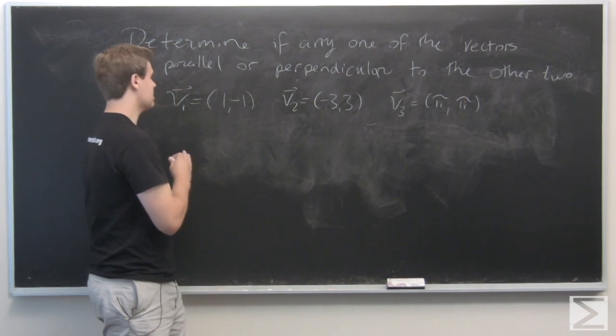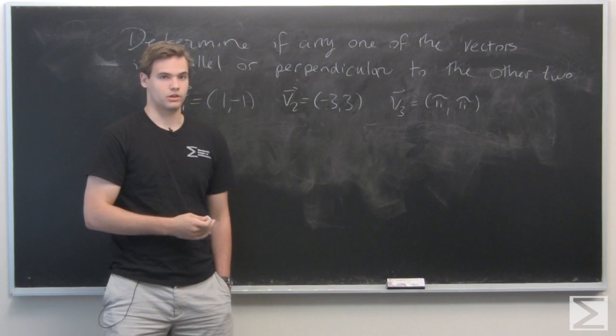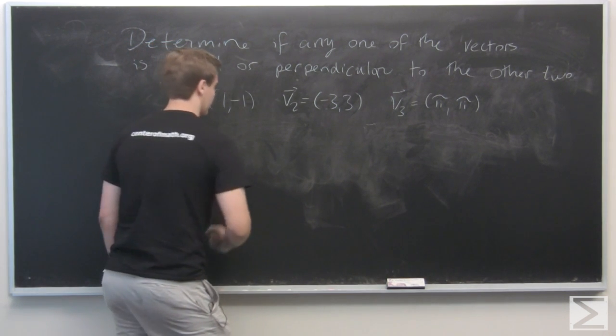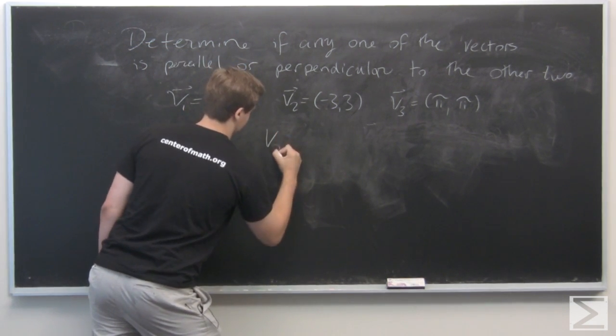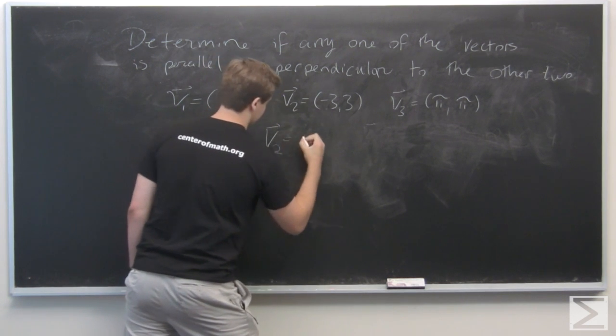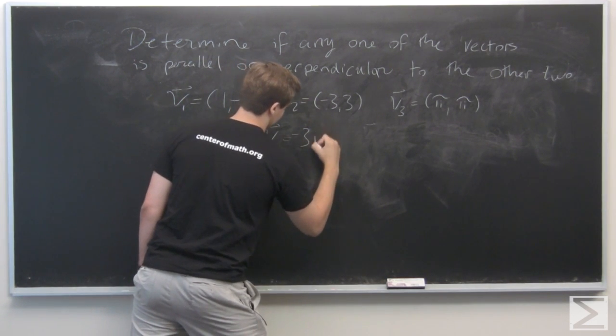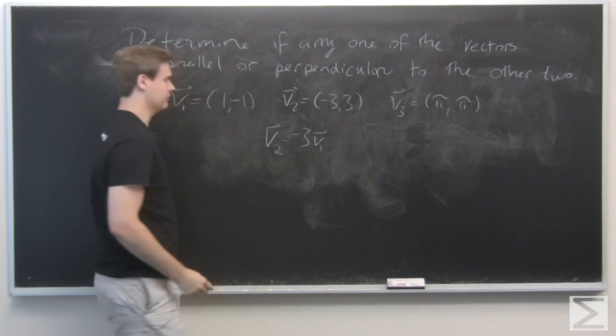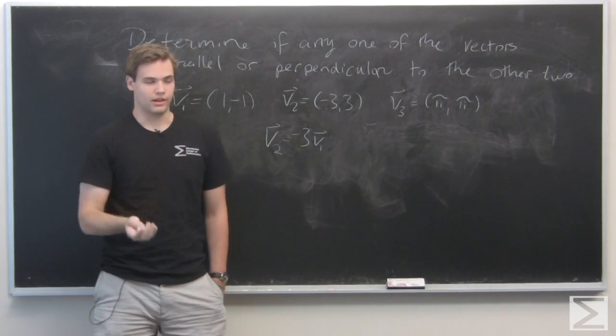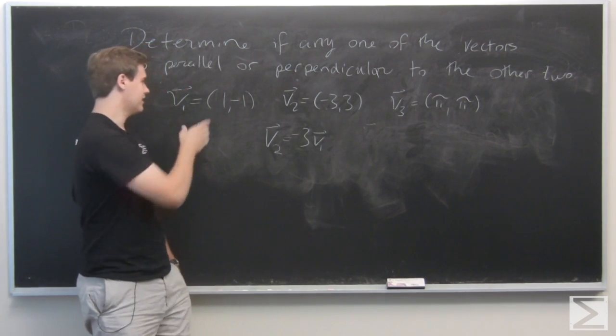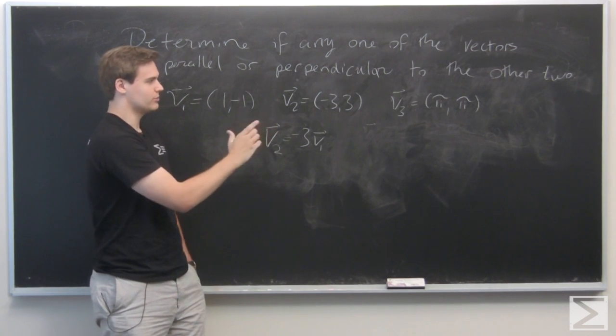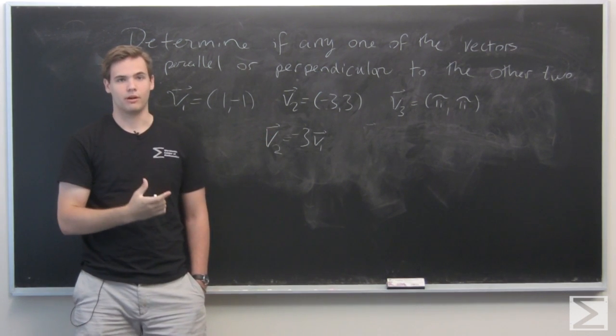Right off the bat, we can see that v1 and v2 are scalar multiples of each other and are, in fact, related by v2 = -3v1. We can similarly see that v1 is not a scalar multiple of v3, so those two are not parallel.